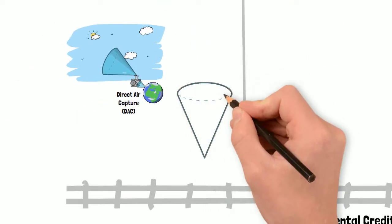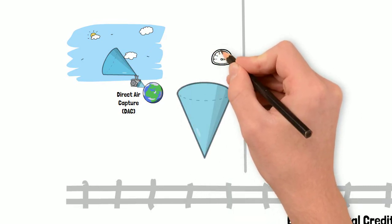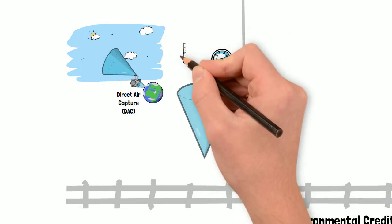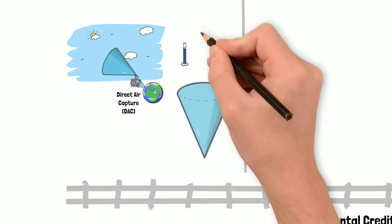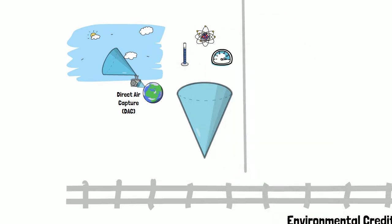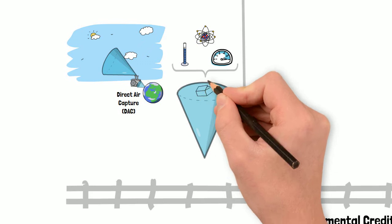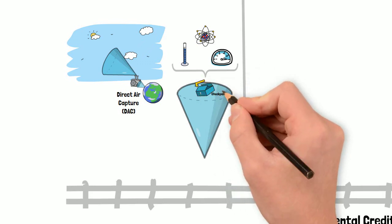The project then begins to collect evidence based on the quality standard, measuring carbon removed as well as the carbon emitted during the process of removing it. The evidence is submitted periodically as a checkpoint for their claim of carbon removal.